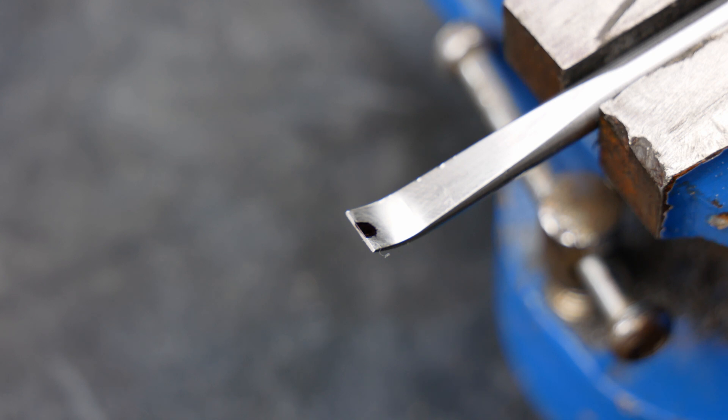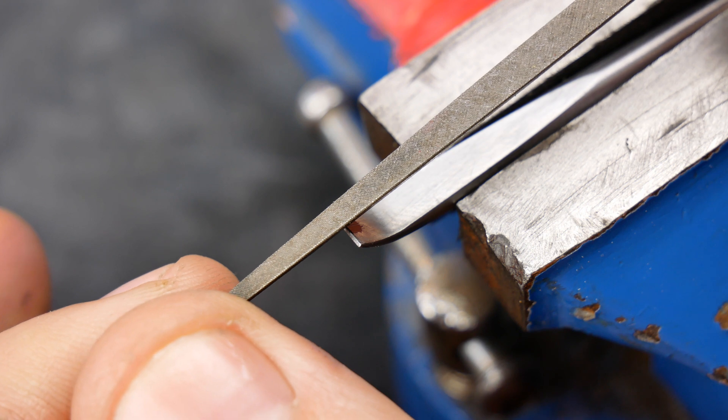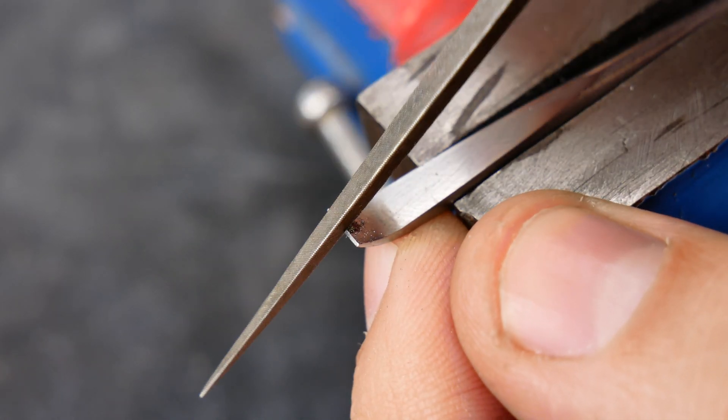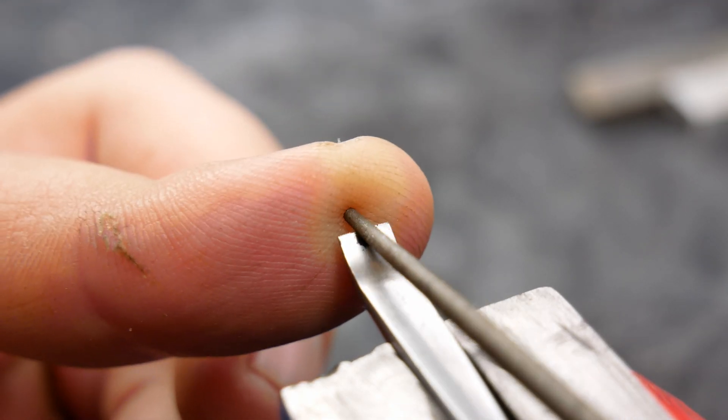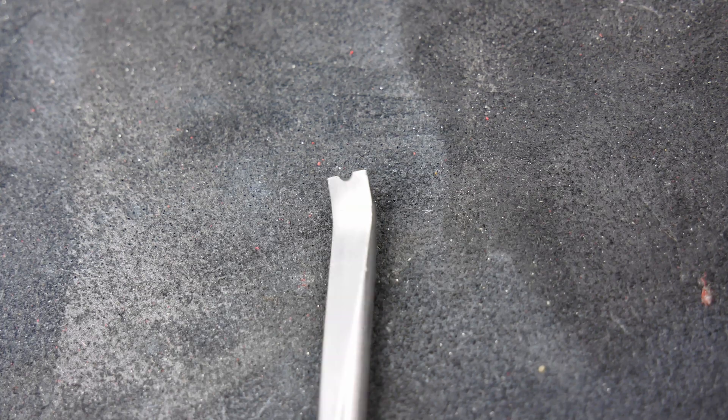Next I mark out the location for the notch in the end of the tip. I start the cut with a triangular file. And after I've removed most of the waste material, I finish things up with the tip of a rat tail file, which is round and tapered. A bit of a tidy with a fine stone, and we're ready to chamfer the other end.